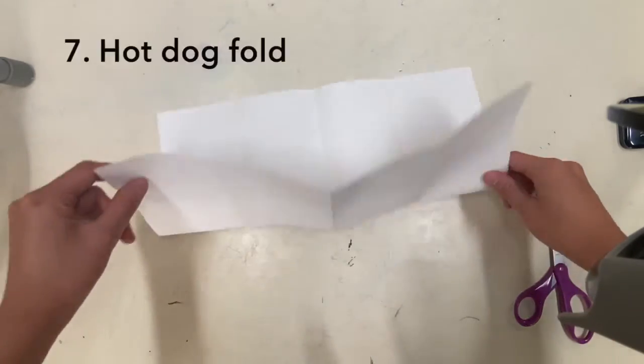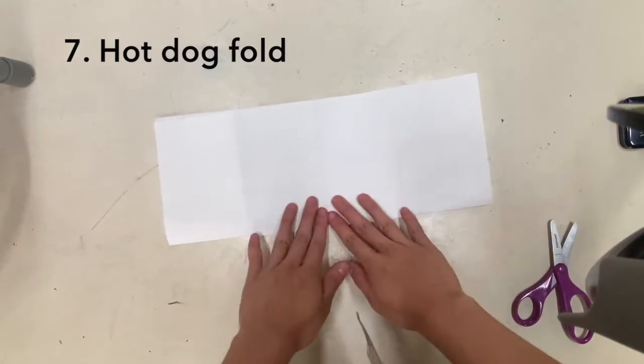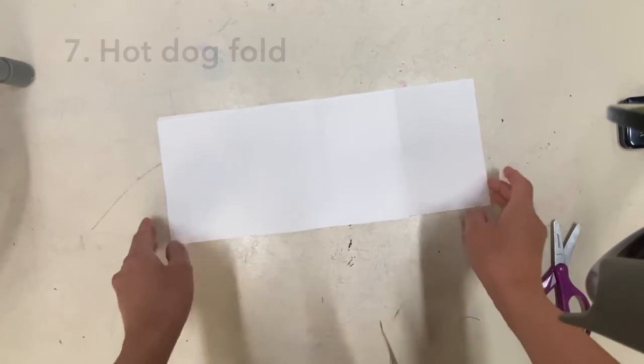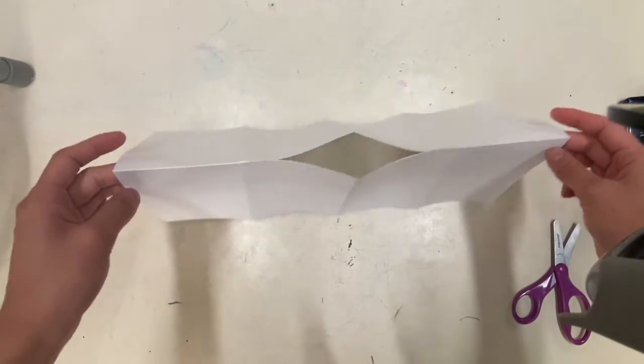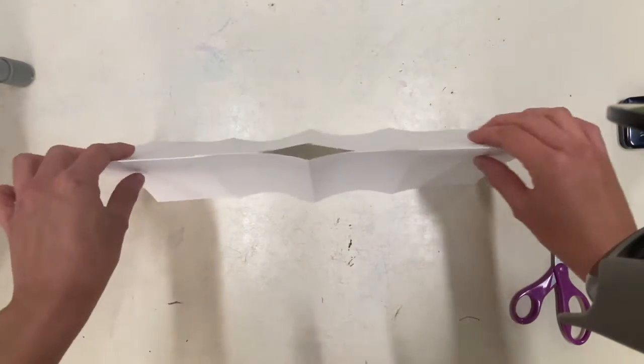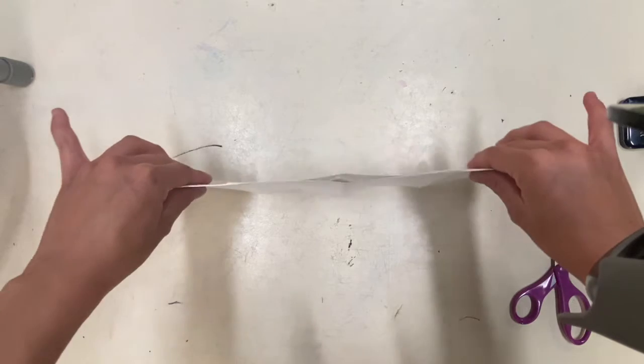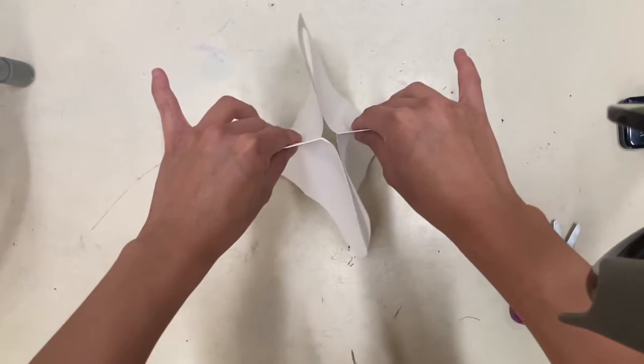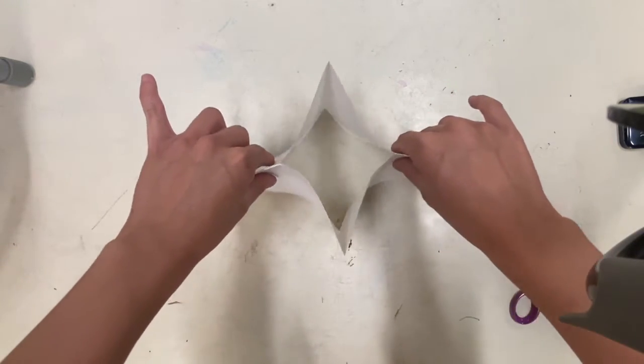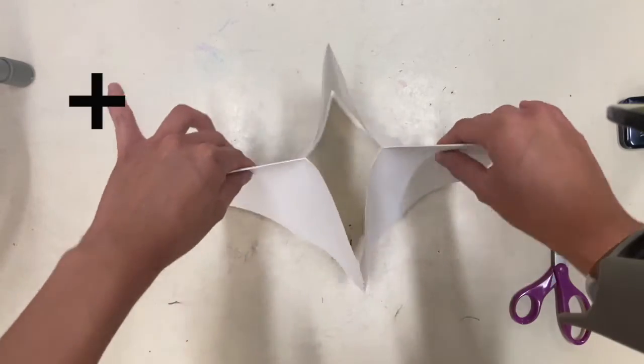I'm going to do a hot dog fold again, long and skinny. I'm going to stand it up so it's like a tent, and this is where I'm going to hold each side and squish into the middle, and it's going to start to create a plus sign.